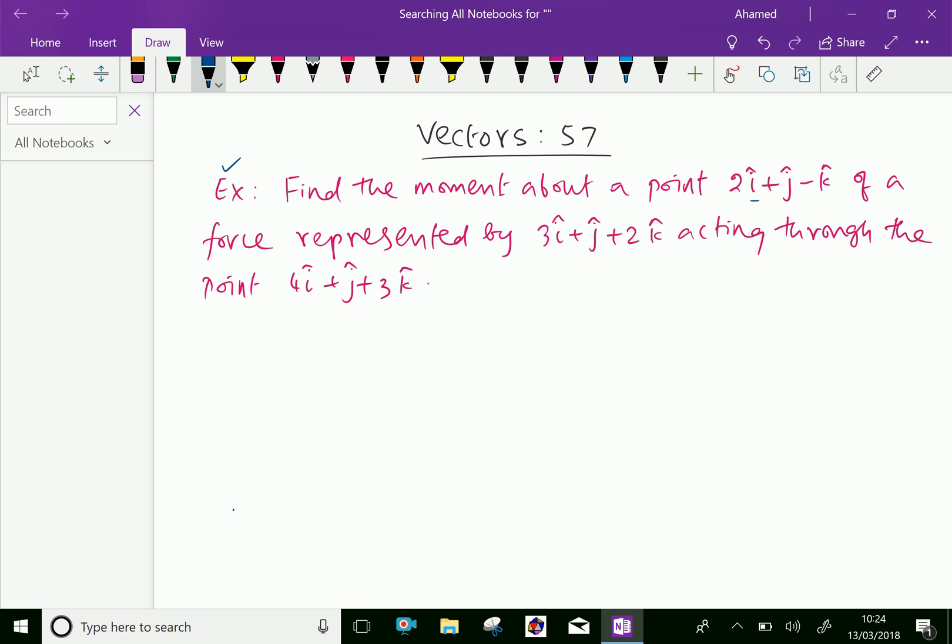Example: find the moment about a point 2i plus j minus k of a force represented by 3i plus j plus 2k acting through the point 4i plus j plus 3k.